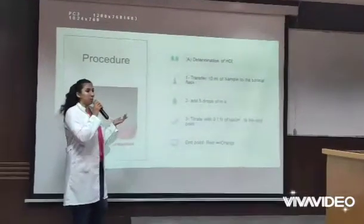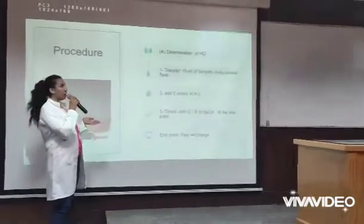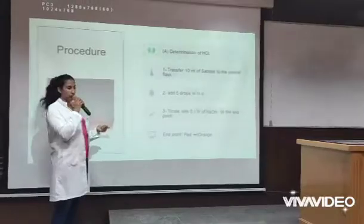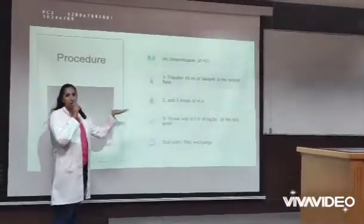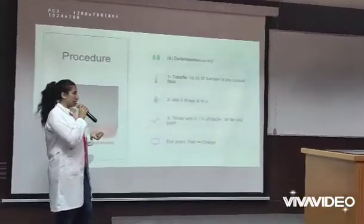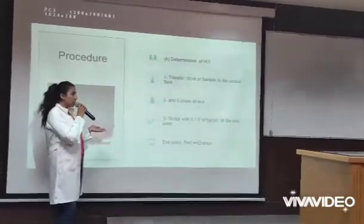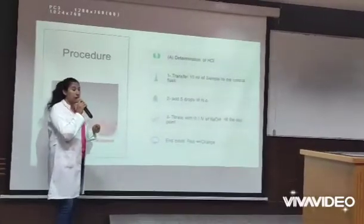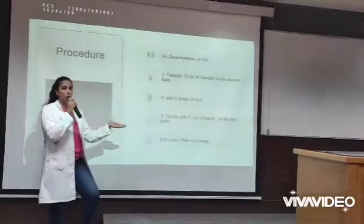Now we will start the procedure for the determination of HCl only, using methyl orange as an indicator. First, transfer 10 mL of the sample into your conical flask. Our sample here is a mixture of HCl and acetic acid. Then add five drops. Titrate with 0.1 N NaOH till the end point is reached.